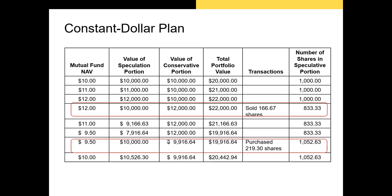The reverse can also be true. If the value of the speculative portion falls from $10,000 to $7,916, you can use the capital gains banked in the conservative portion and invest those in the speculative portion, essentially covering the capital losses. Here, you're purchasing 219 shares worth of speculative securities. Notably, when you're doing that, you're buying potentially undervalued speculative shares — one reason why constant dollar plans are relatively popular.